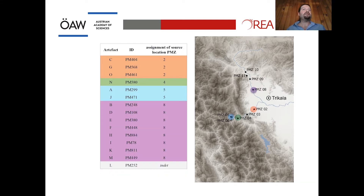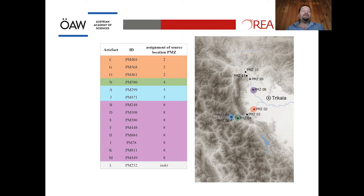Applying our geochemical source results to the artifacts, we see that most material comes from PMC8 — the Pineios River — which is somewhat surprising, as our geoarchaeological surveys found better and more material in the Portaikos (PMC2). This likely has cultural reasons: the inhabitants of Platia Magula Zarko may have had closer relations to the Pineios area, and also because the Pineios is a larger watercourse that can be navigated.